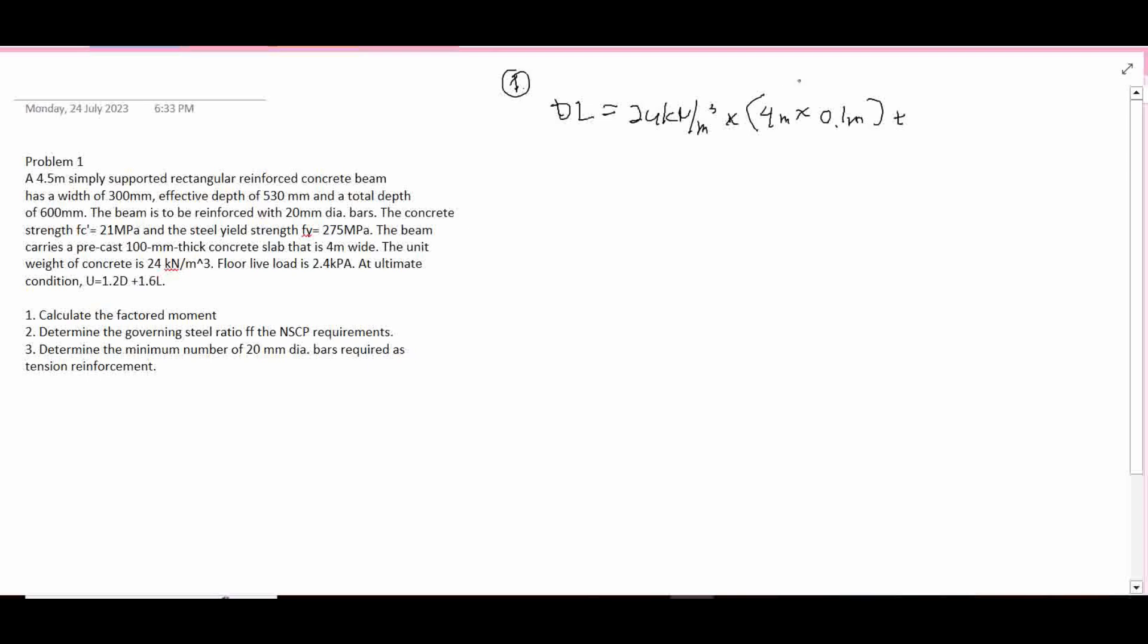Plus the self-weight of the beam, which is the unit weight 24 kilonewton per cubic meter, times the dimension of the beam 0.3 meters times 0.6, the total depth. So we have the total dead load of 13.92 kilonewton per meter. This is meter squared and this is cubic meter, cancel, so that's meter only.